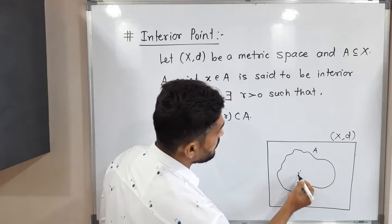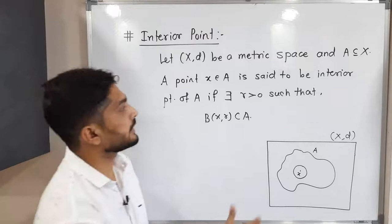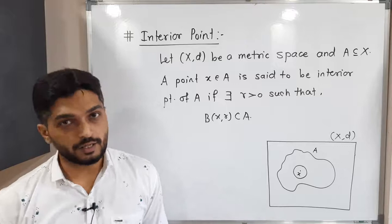So that means when we have any point, let me show you in this diagram. A is a set and X. When we say X is an interior point of A, if it is possible to find a ball around X which is a subset of A, then we say X is the interior point of A. If there exists r greater than 0 — radius greater than 0 — such that the open ball with center X and radius r is a subset of A.